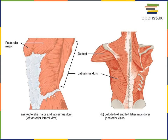Starting with the large superficial muscles: on the anterior we have pectoralis major in the mammary region, and the action of pectoralis major is to adduct and flex the glenohumeral joint. The deltoid is a triangular shaped muscle giving shape to the shoulder in the acromial or deltoid region, and the action of the deltoid is to abduct, flex, or extend the glenohumeral joint. So while pectoralis major adducts the glenohumeral joint, the deltoid is an antagonist to pectoralis major when the deltoid performs abduction.